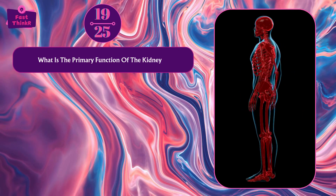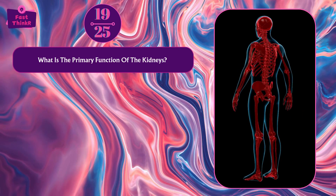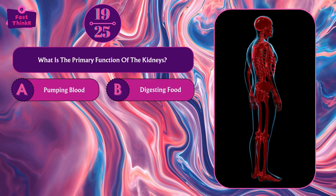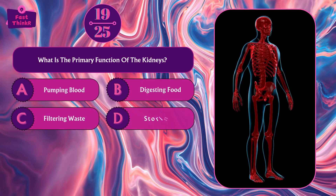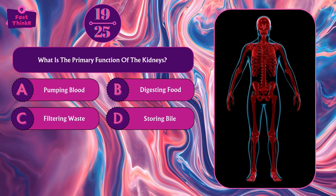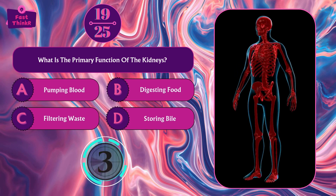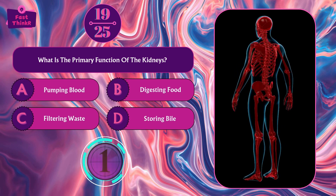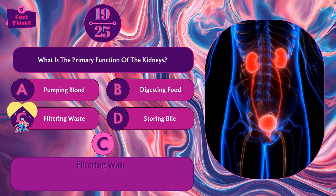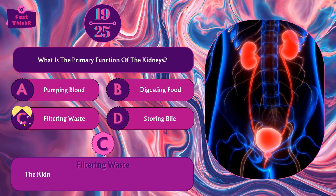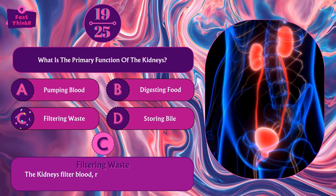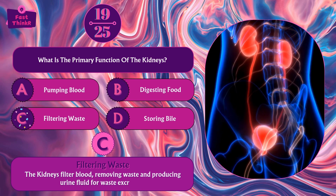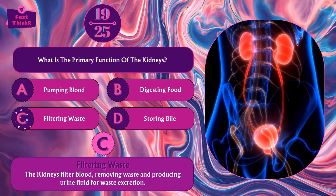What is the primary function of the kidneys? Pumping blood, digesting food, filtering waste, or storing bile? Option C — filtering waste. The kidneys filter blood, removing waste and producing urine for waste excretion.